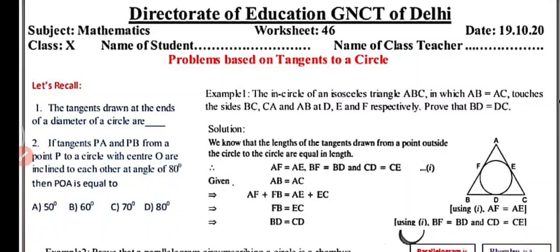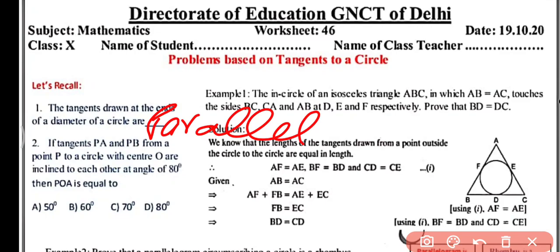Hello everyone, welcome to my YouTube channel NCRT Math Sub. Today in this video we will do worksheet number 46 for class 10, subject mathematics. We are going to do some problems based on tangent to a circle. Before that, let's recall: the tangent drawn at the ends of a diameter of a circle are parallel. We have already studied this in the previous video, worksheet 45. You can watch that video from the playlist.